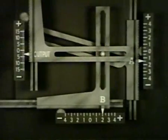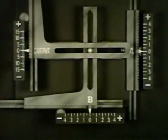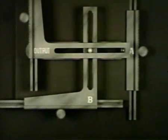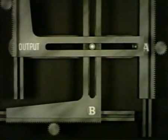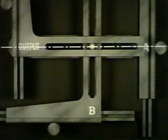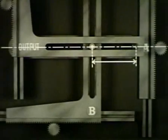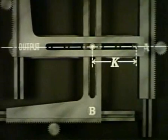The reason why the output of this mechanism is the product of the two inputs can be shown geometrically. Starting with the multiplier pin centered over the stationary pin, we'll use this line as a baseline. The distance along this line from the stationary pin to the pivot pin is a constant. Let's call it K.